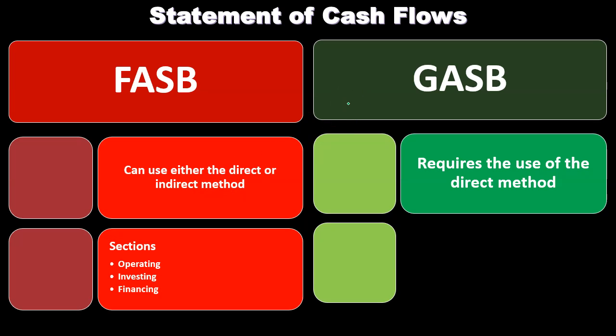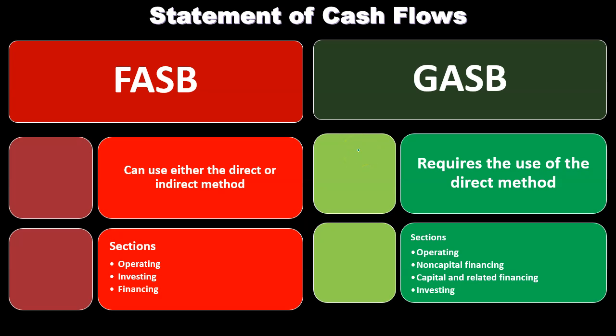For GASB, it requires the use of the direct method, so we have to use the direct method for GASB. The sections involved will be similar but slightly different: we have the operating section, the non-capital financing section, the capital and related financing section — so the financing section is broken out — and investing.